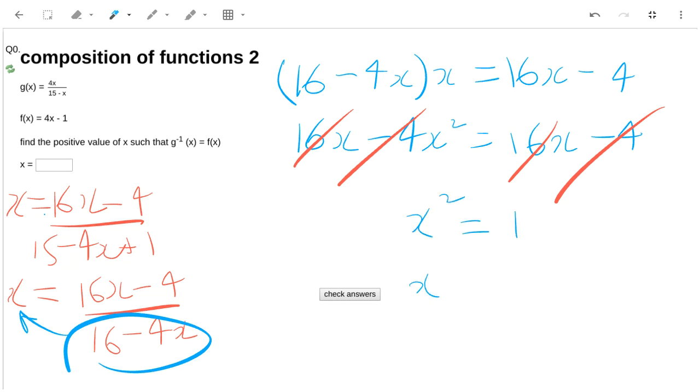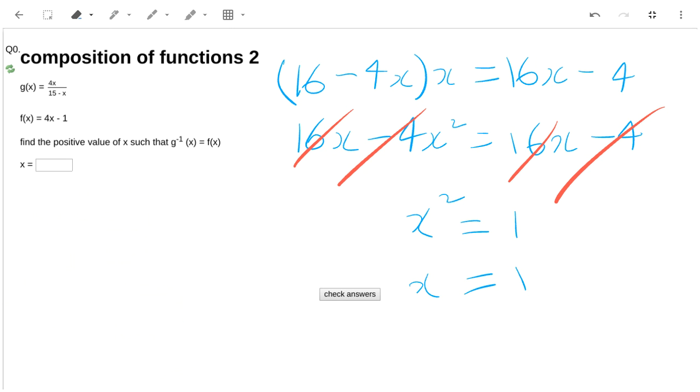So x equals 1. Now, I might be able to try that and show that it works. So we need f of x. Let's just say f of 1 is 3. g of 3. And g of 3 is going to be 4 times 12 divided by 12. g of 3 is 1. And that means that the inverse of g of 1 is also 3. So those two agree.